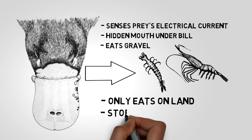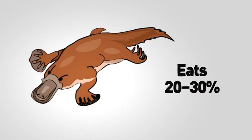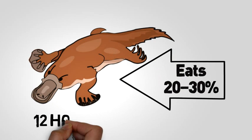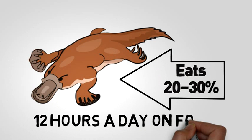Only eats on land. Stores prey in pouches. Eats 20-30% of body weight daily. 12 hours a day on food.